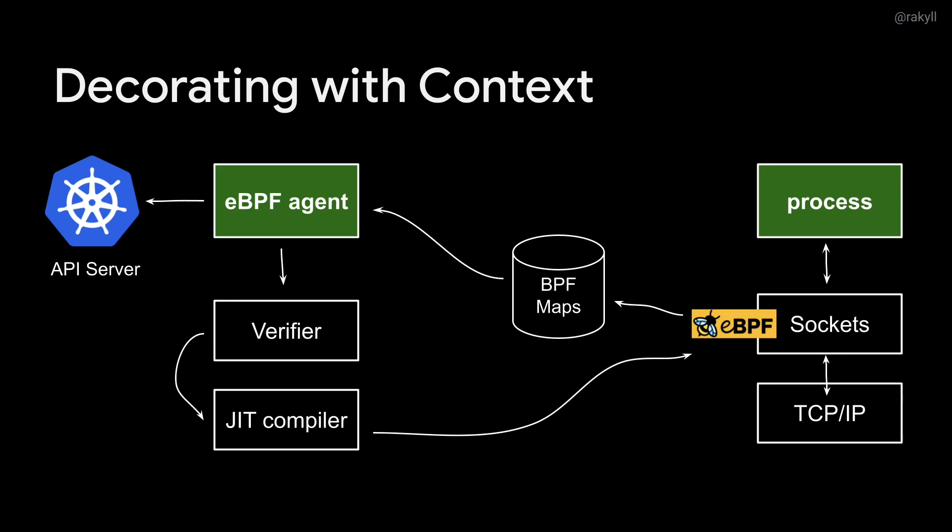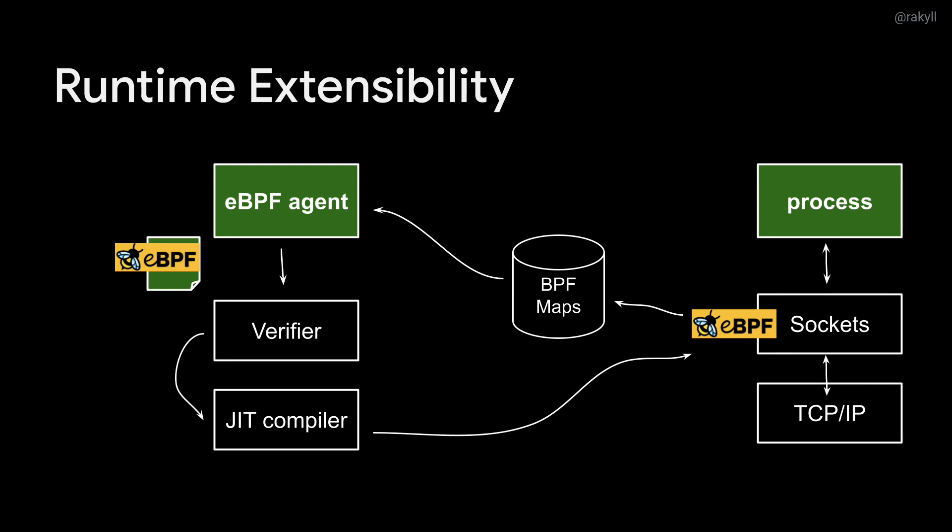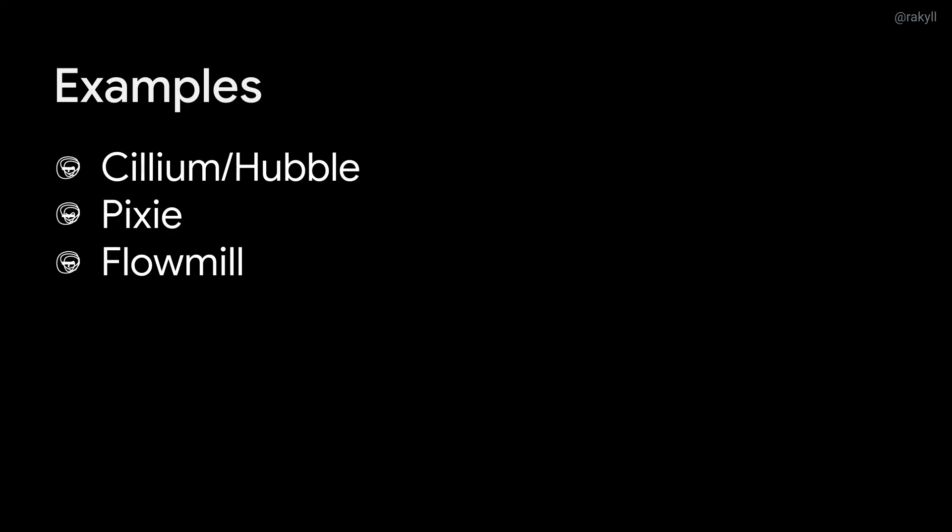eBPF allows us to decorate data with context. For example, once you collect network events, you can ask a service discovery mechanism — in this case, the Kubernetes API server — to resolve source and destination IPs, and resolve metadata associated with them to decorate the collected data. eBPF also allows you to enable and disable collection at runtime: you can JIT compile new programs and attach new probes dynamically, enabling momentary collection. Several community and industry tools are already building on this — Cilium and Hubble for network diagnostics and service maps, Pixie for similar things plus profiling, and Flowmill focused on network diagnostics with low overhead.